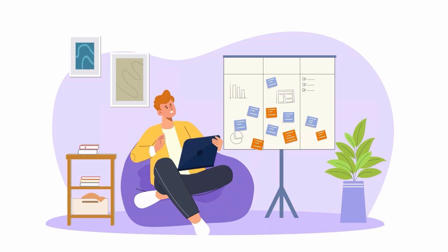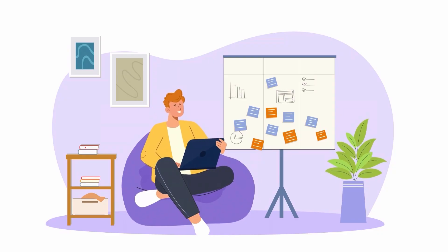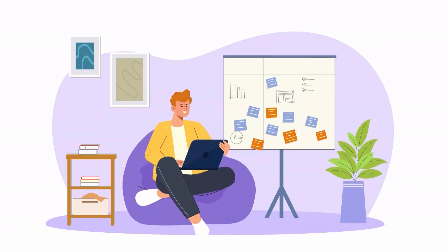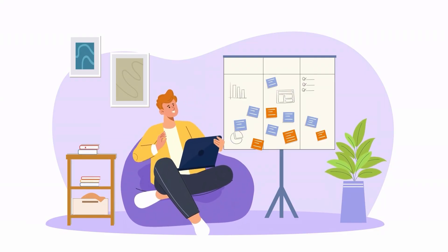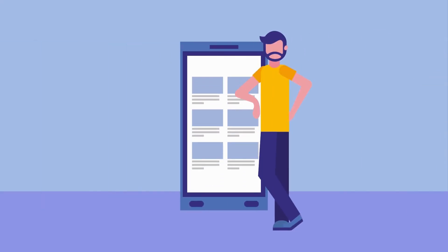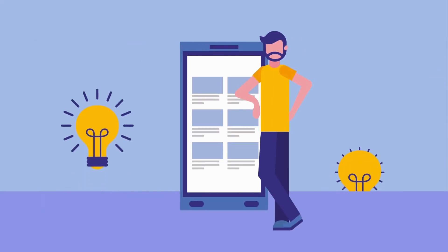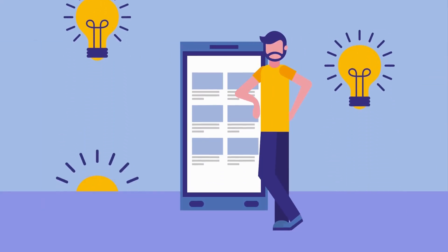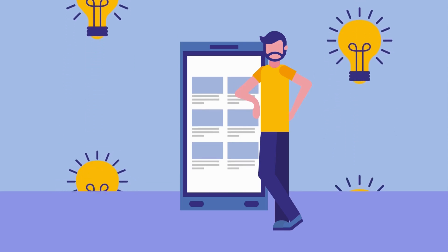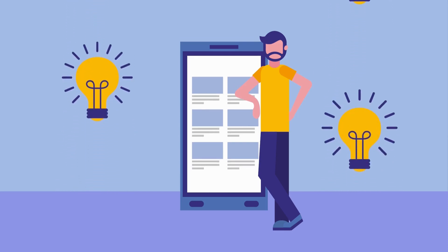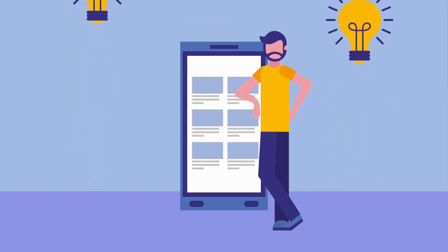Once you've first identified and really understood your market's problem, pain points, and desired outcomes, you can then focus on coming up with a solution. The solution is made up of the features you'll build to help solve those problems and get your users closer to those desired outcomes.